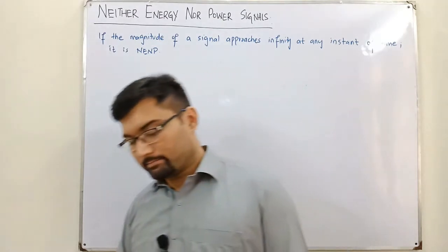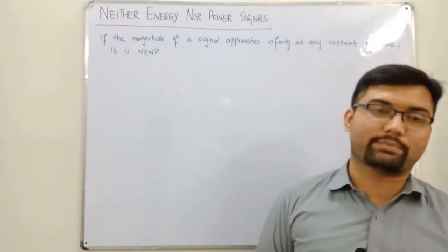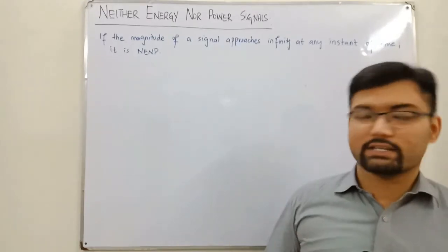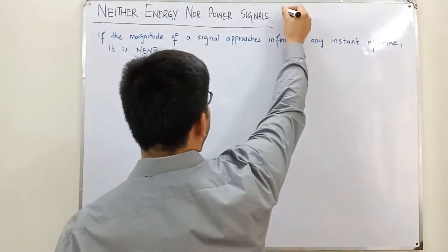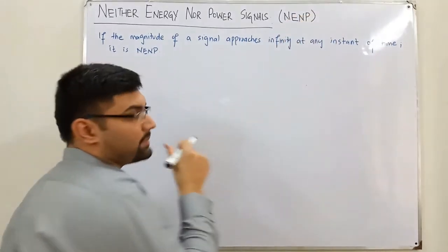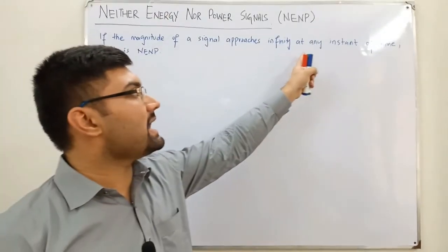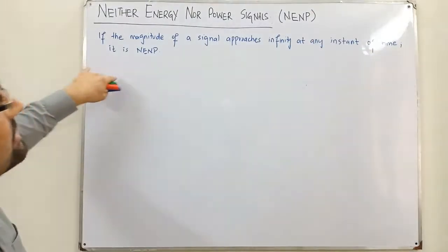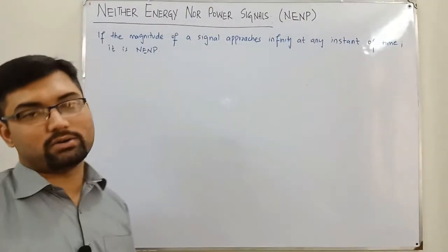Assalamu alaikum. Today we have the topic of neither energy nor power signals. We've seen the energy signal separately and the power signal separately, but there is a class of signal that would neither satisfy the conditions for energy signals nor the conditions for power signals. That class of signal is the neither energy nor power signal. If the magnitude of a signal approaches infinity at any instant of time, that signal is neither energy nor power.